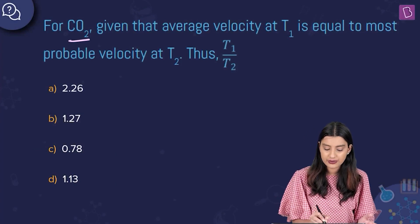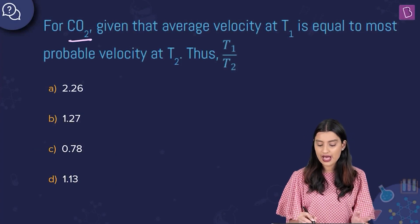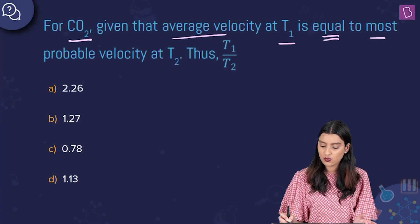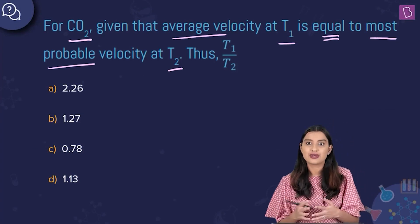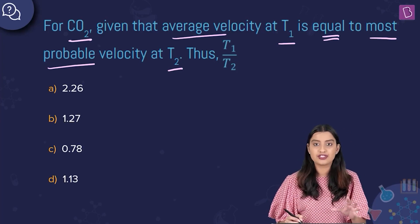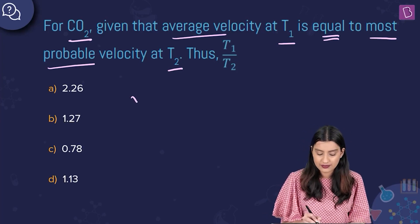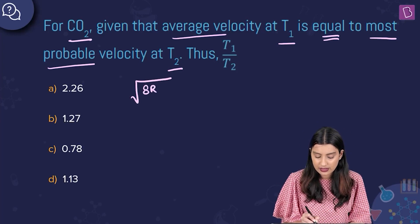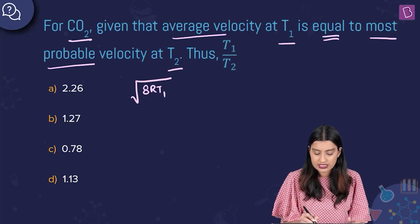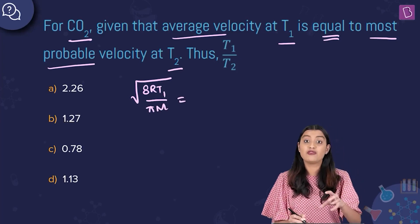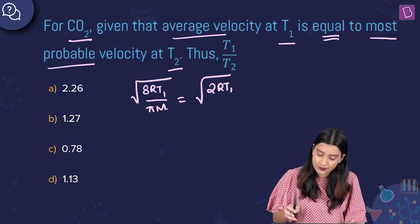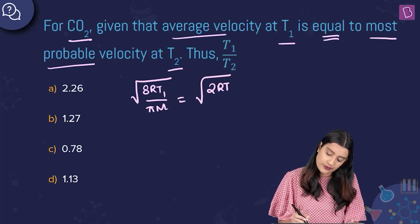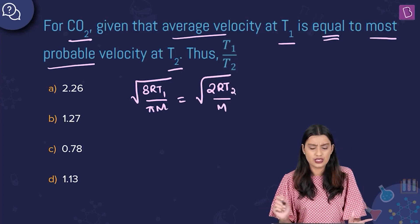For carbon dioxide, the average velocity at T₁ equals the most probable velocity at T₂. Find the ratio T₁/T₂. The average velocity formula is √(8RT/πM), so at T₁ it is √(8RT₁/πM). The most probable velocity formula is √(2RT/M), so at T₂ it is √(2RT₂/M). These two are set equal.